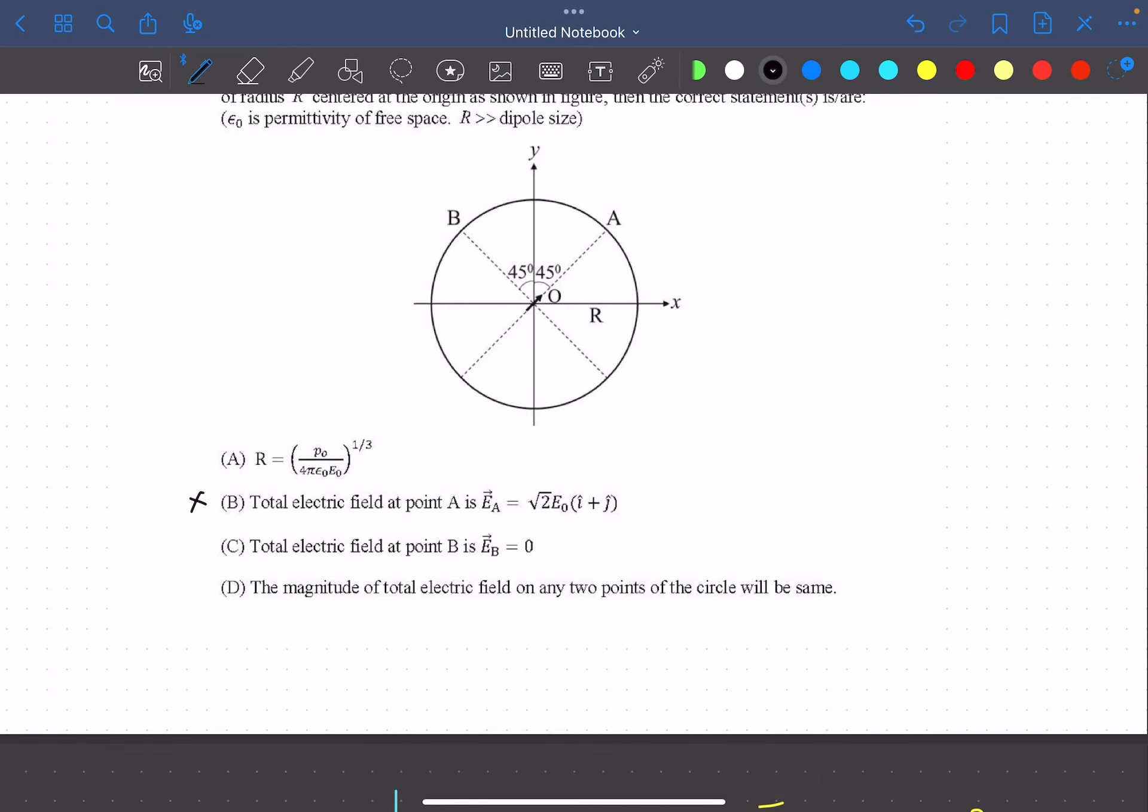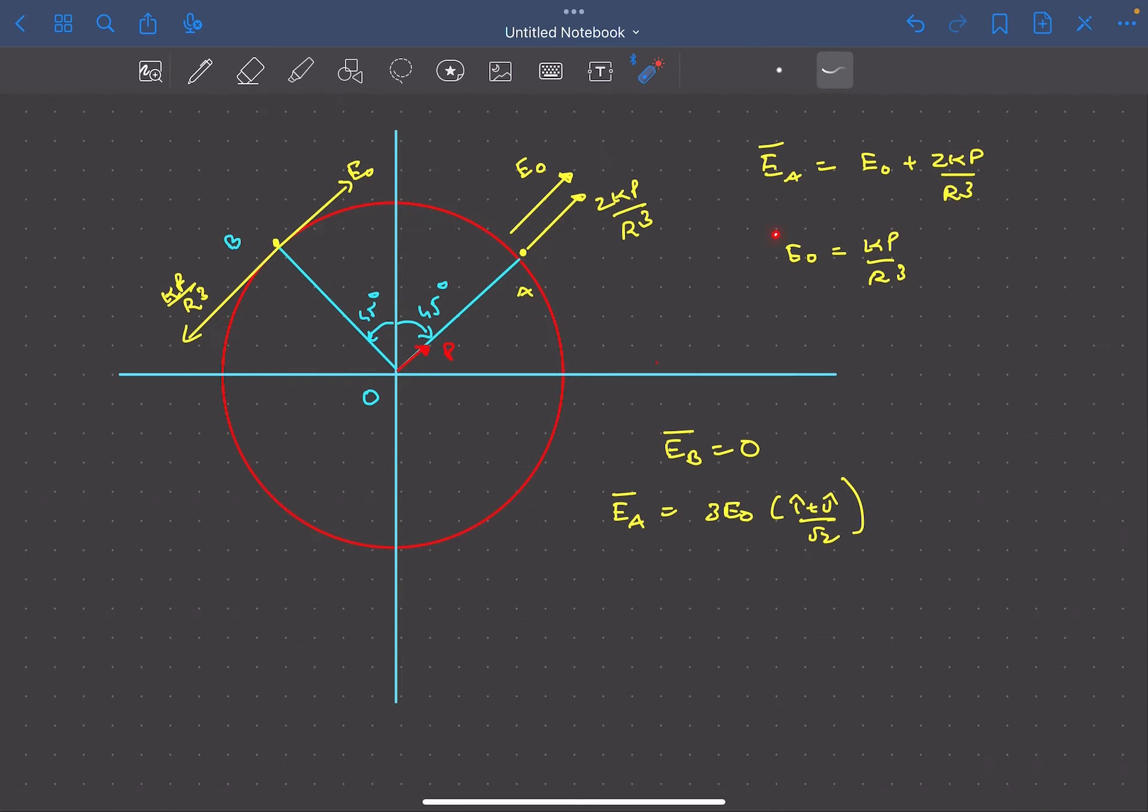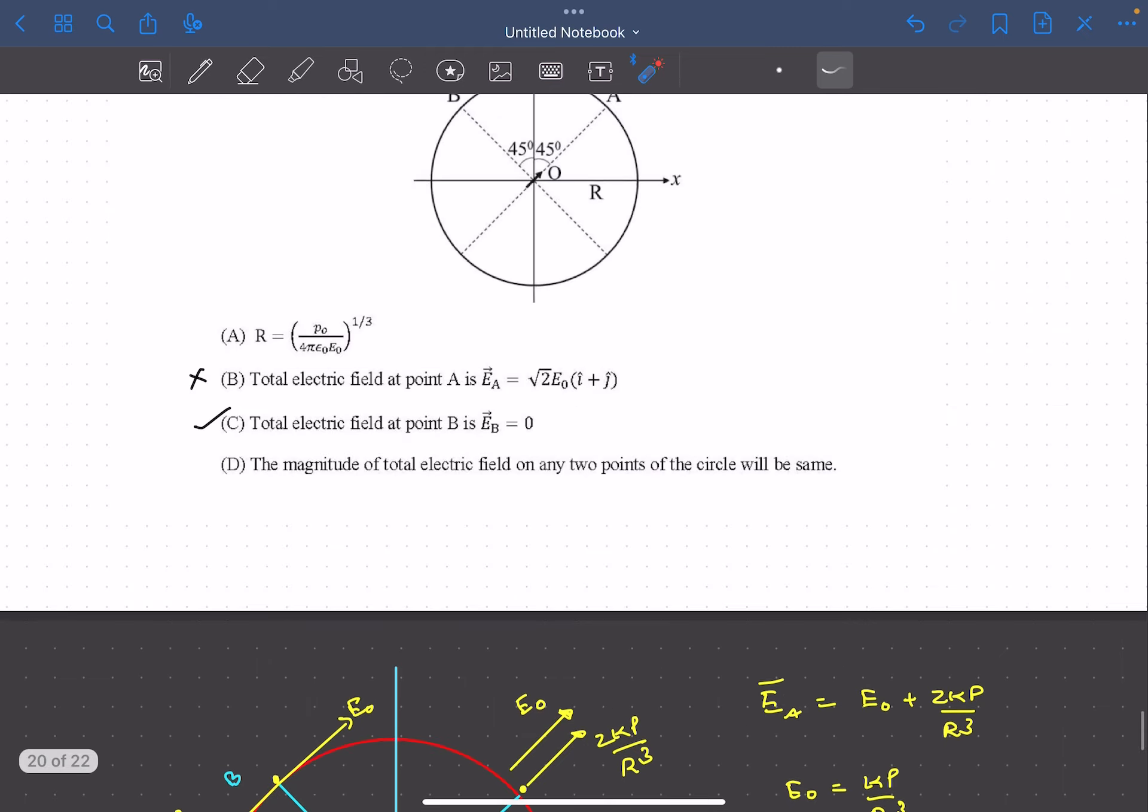Looking at the options, option B is wrong and option C is correct. Now we need to determine the radius of the circle. Using this relation and solving for R, we find the radius to be (p/4πε₀E₀)^(1/3), which is given in option A.